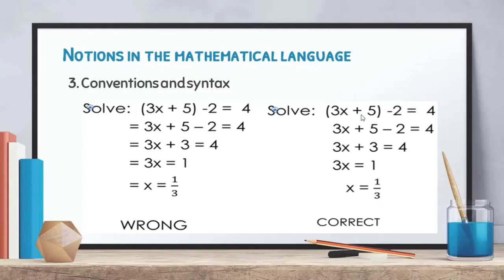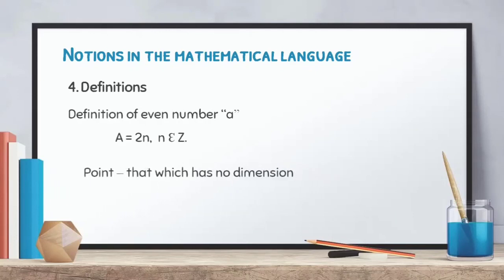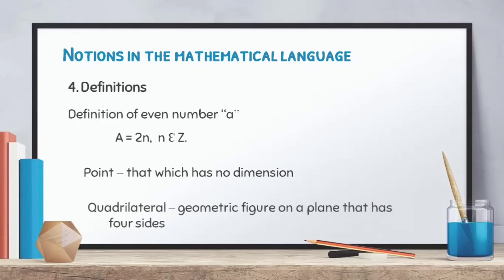For definitions: we can define mathematical objects by means of description. For example, an even number a is defined as a = 2n, where n is an element of Z. A point is defined as having no dimension. A quadrilateral is defined as a geometric figure on a plane that has four sides. We can have definitions of terms in mathematics as well as definitions of the symbols we are using.